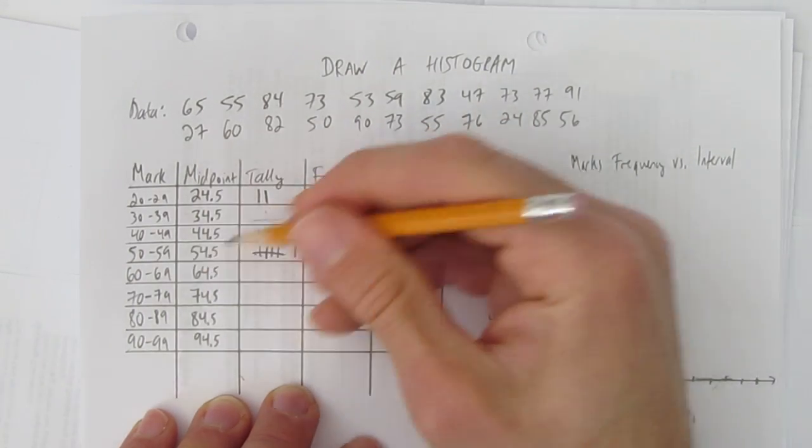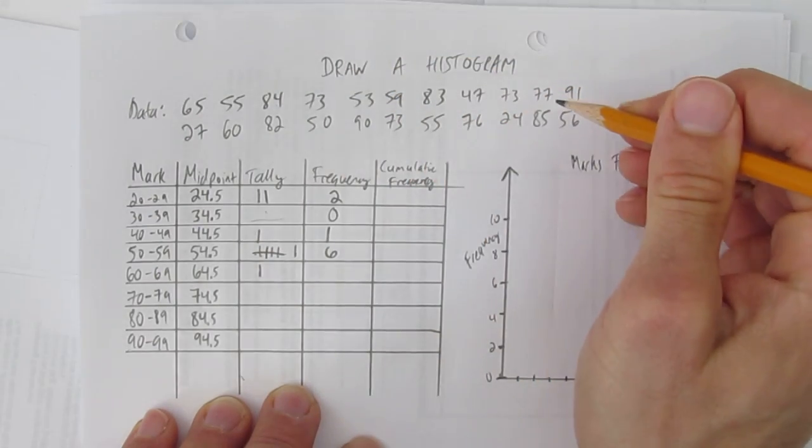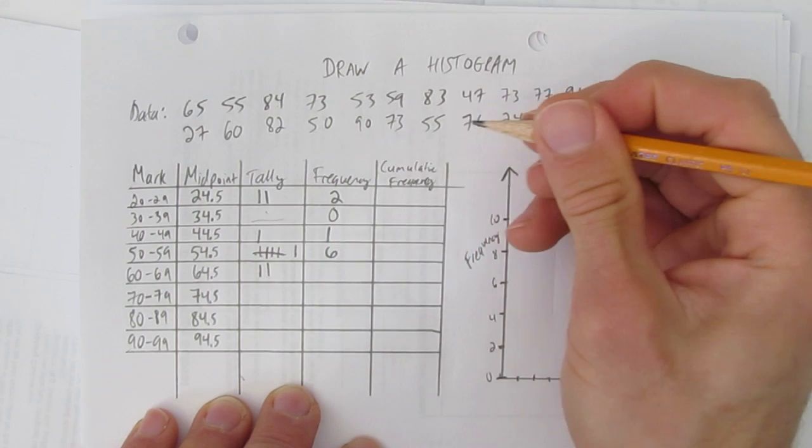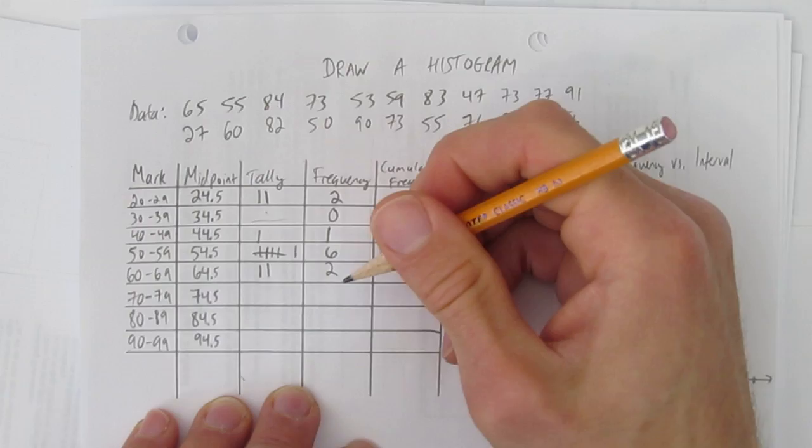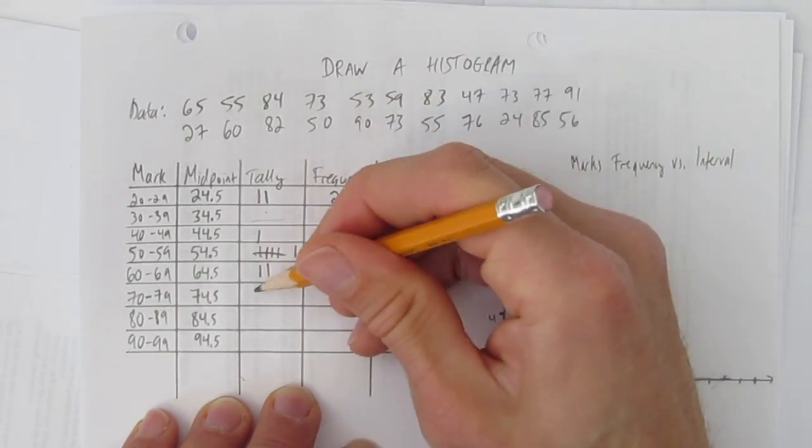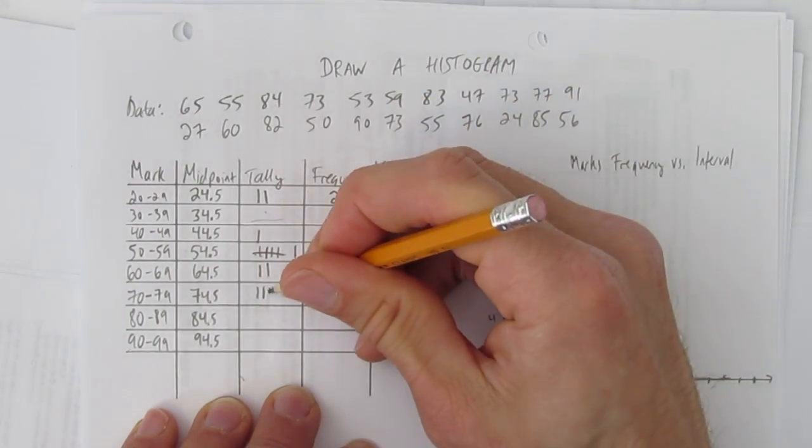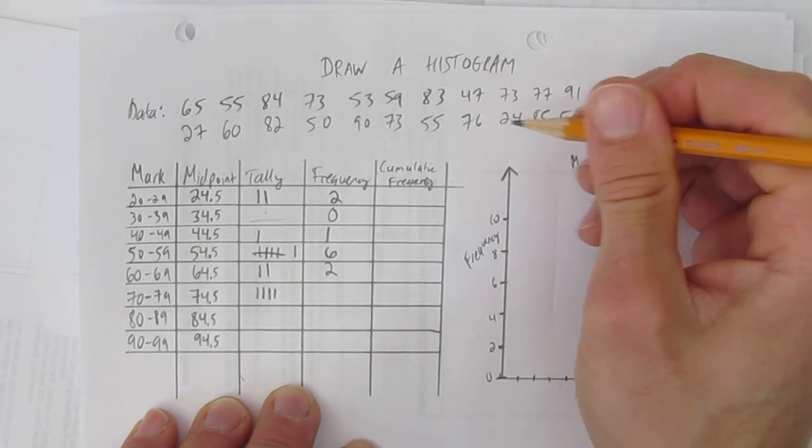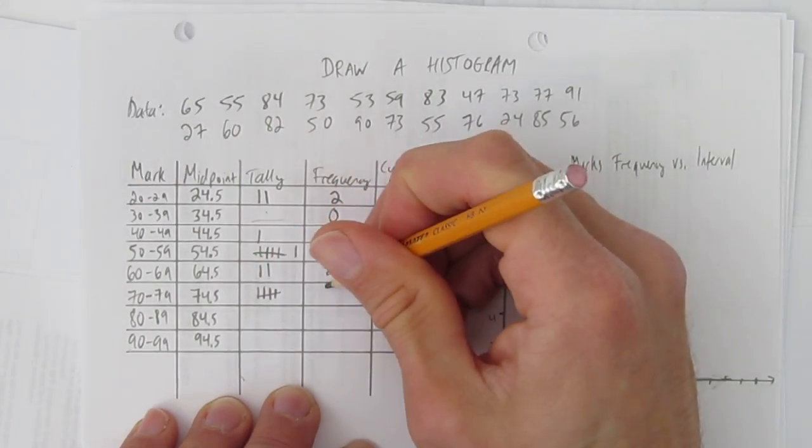How many numbers between 60 and 69? There's one there and one there. So any other 60s? Nope. There are two numbers between that one. How about in the 70s? 70 to 79. I got one at 73, another 73, a 77, and another 73. That's a total of four. Oh, and maybe another one. There's five. Yep. There's five there.